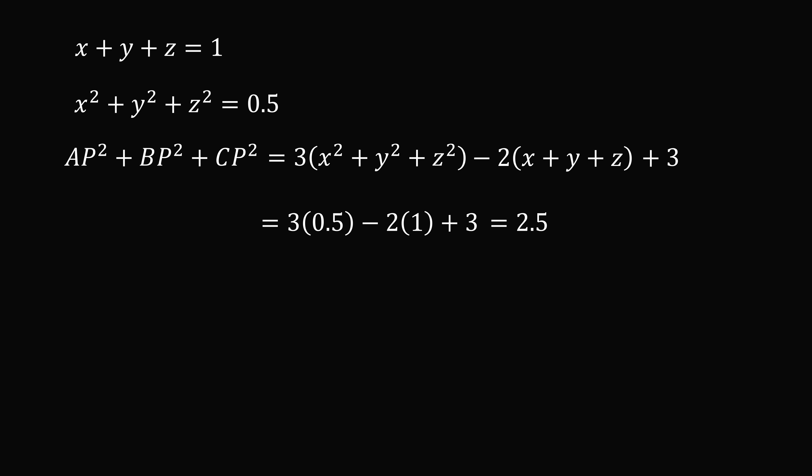So we've figured out that the sum of the squared distances is always equal to some constant for any point P. In general, when we have different coordinates, AP squared plus BP squared plus CP squared is always equal to some constant K. And that completes the proof.